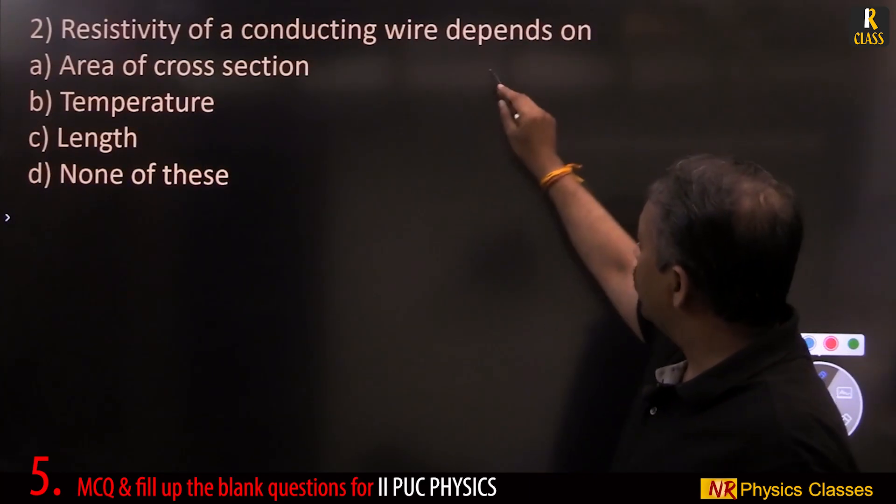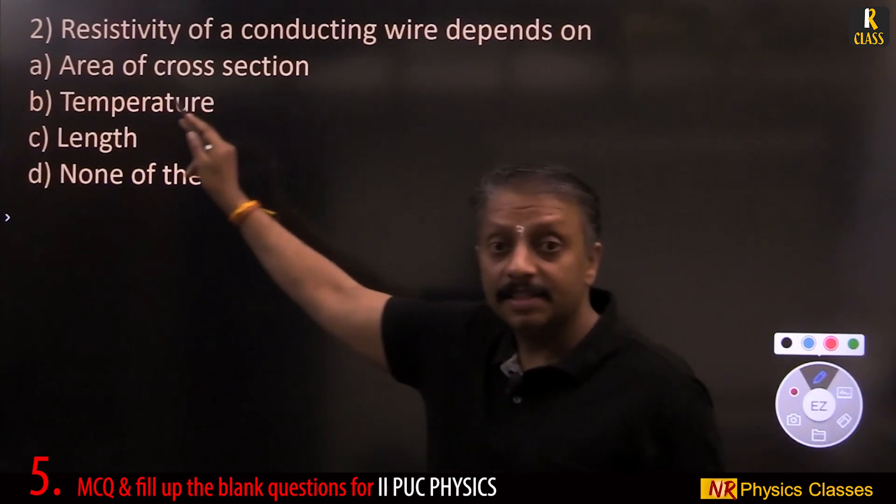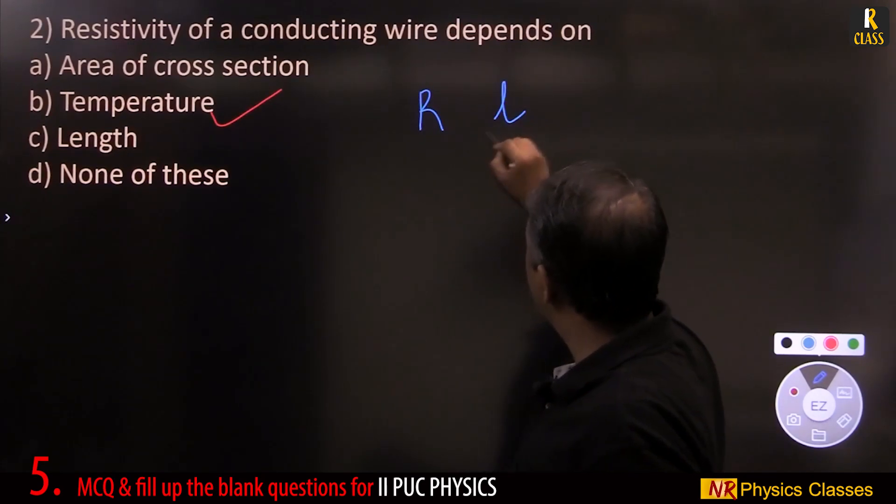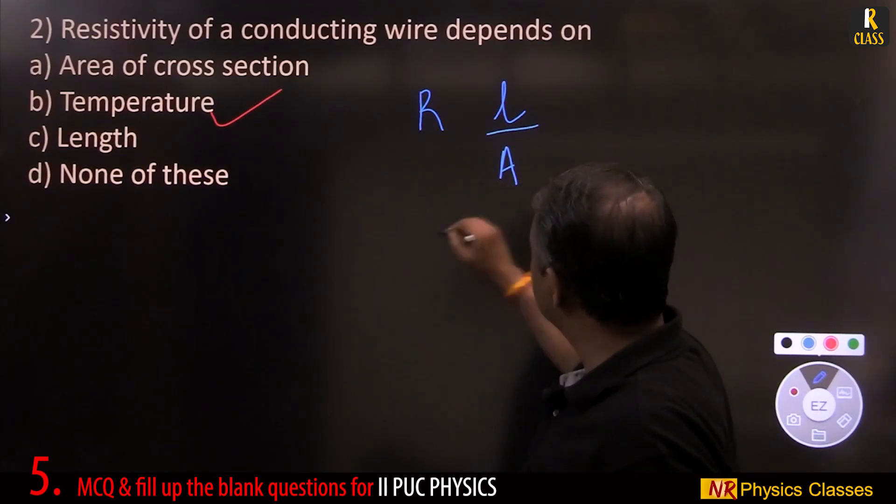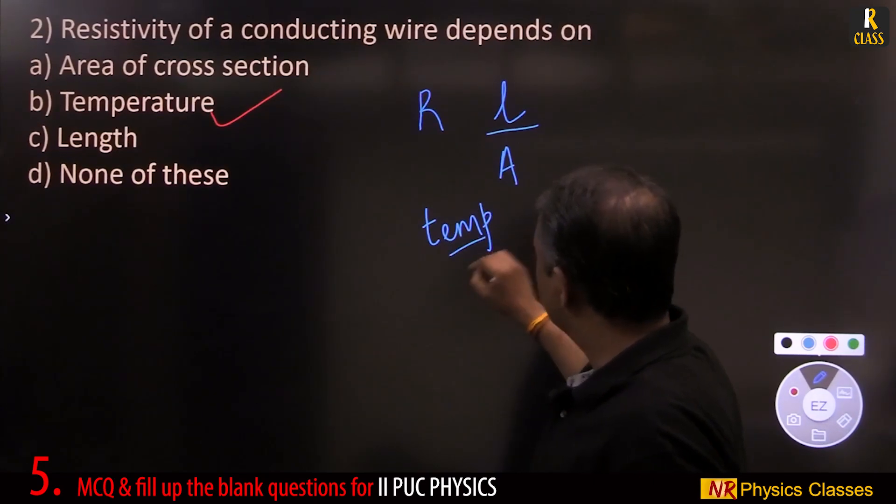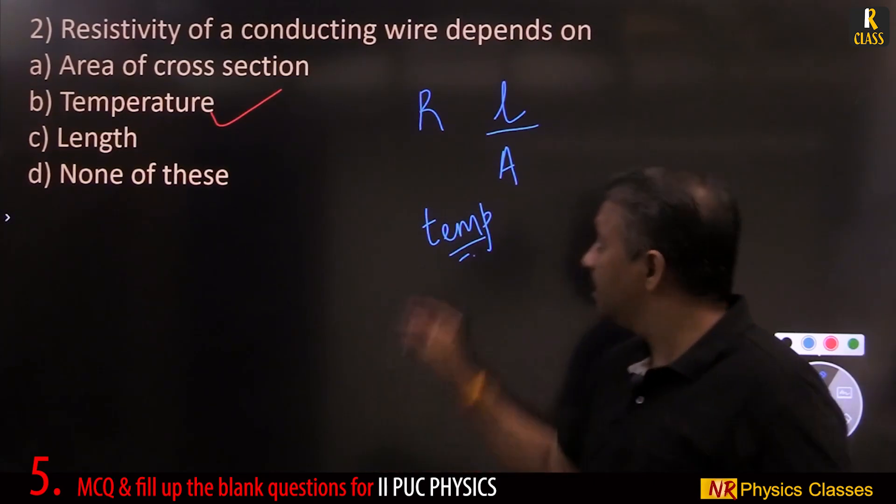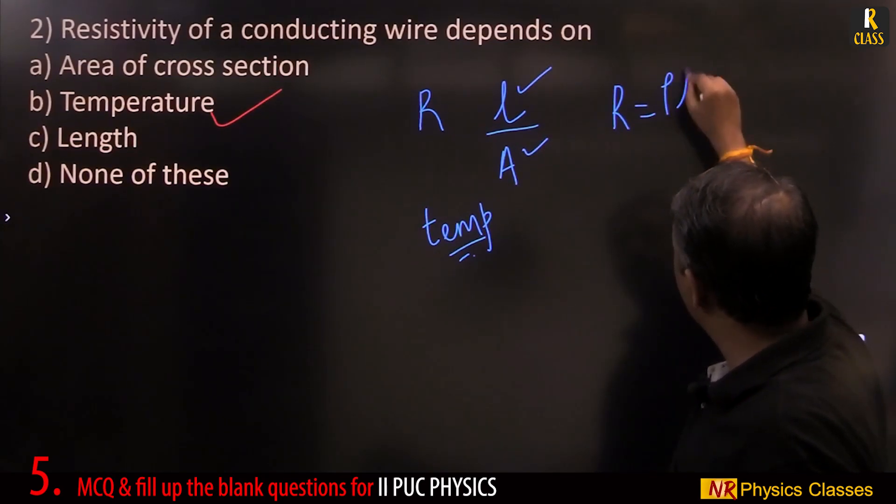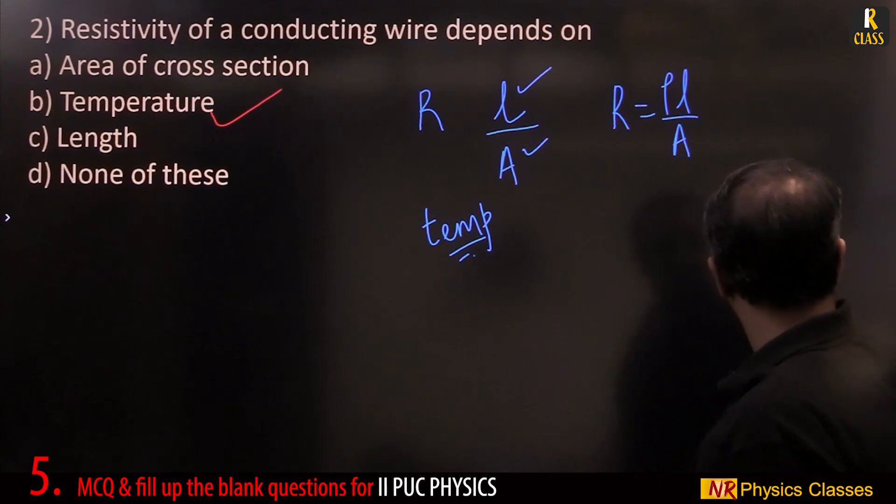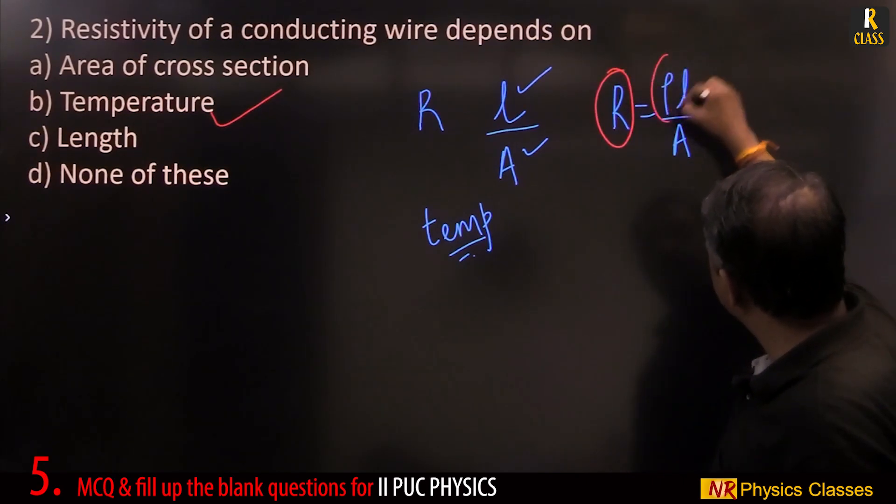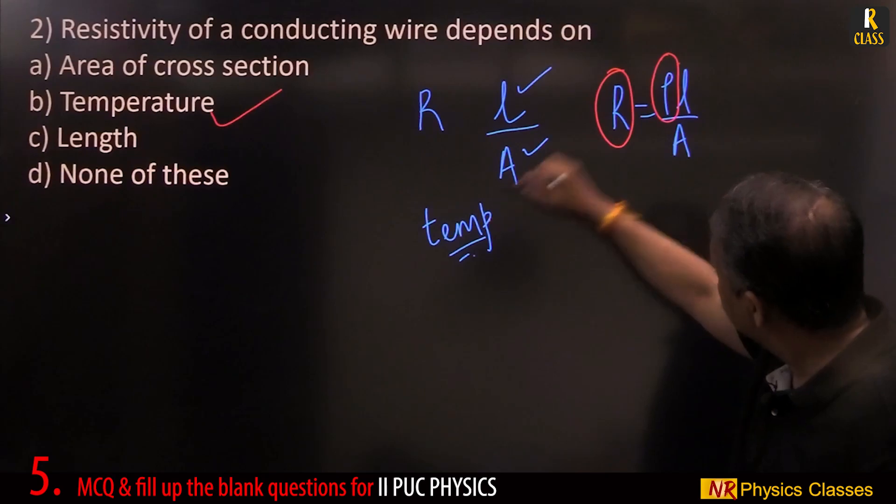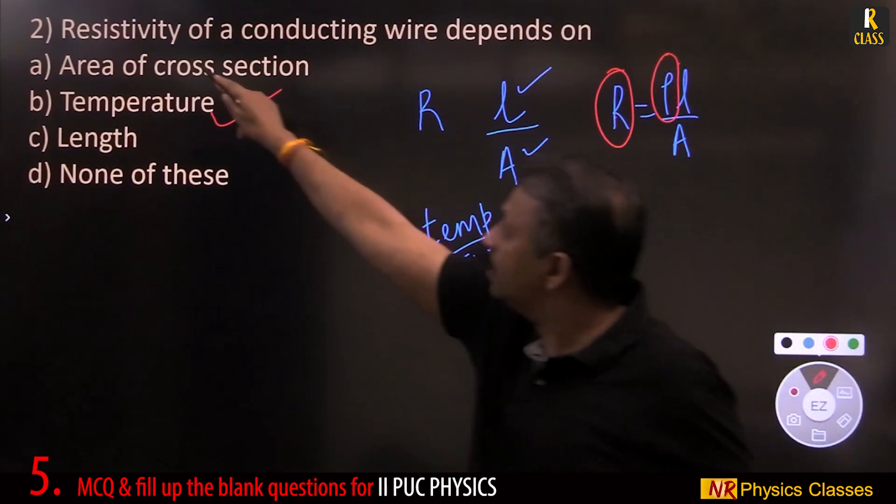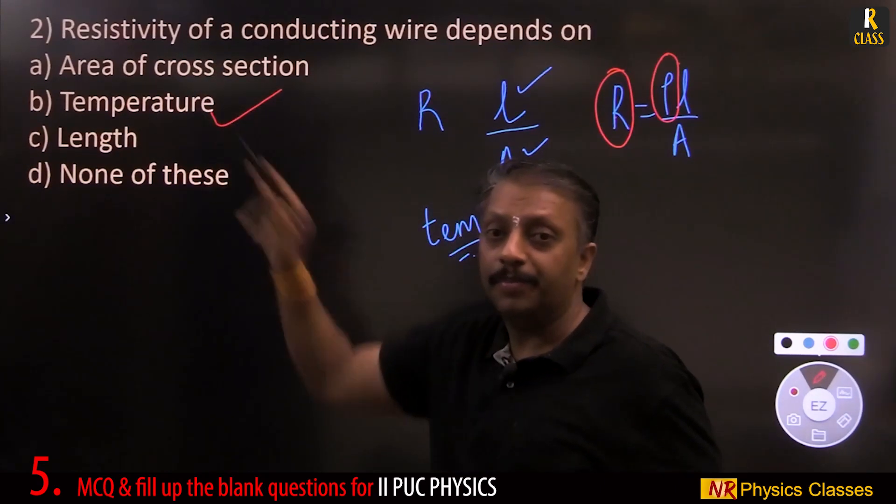Resistivity of a conducting wire depends on temperature. Resistance depends on length, area of cross section, and also on temperature. Please understand, resistance depends on these two. R equal to rho L by A. Resistance also depends on resistivity. Resistivity depends on temperature. Therefore, resistance also depends on temperature. But here, it is only resistivity. Therefore, only temperature.